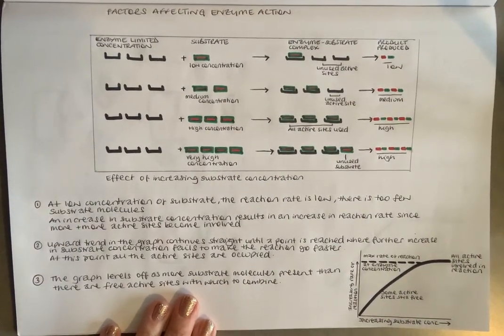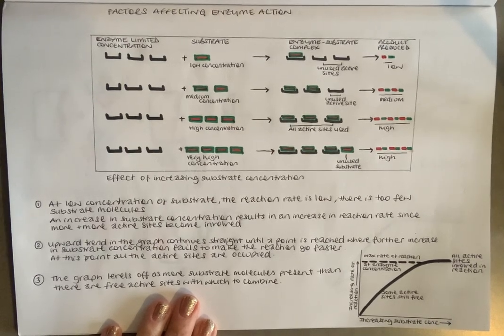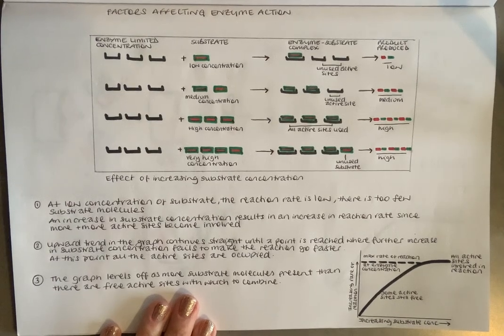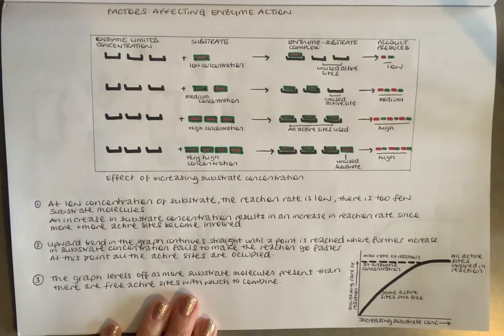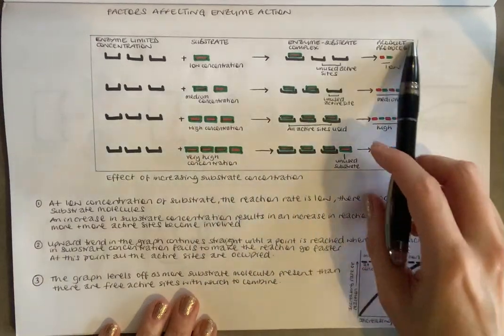Factors affecting enzyme action. Most pupils before we even reach this point will ask the question: what happens if you increase substrate concentration? Does that mean that the more substrates you have, the more products will be created, will be synthesized? I'm hoping this diagram explains this in a bit greater detail.